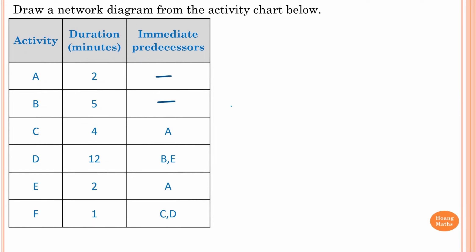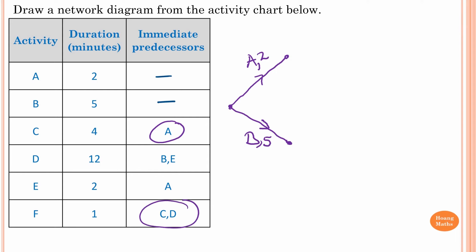For the next example, A and B have no immediate predecessors, so we start like this. Activity A has a weighting of two and activity B has a weighting of five. For activity C, A is an immediate predecessor. Pay attention: since C and D are predecessors of F, activity C and D have a common vertex.